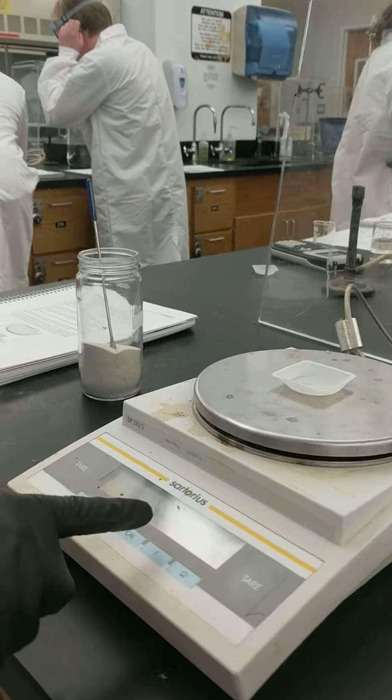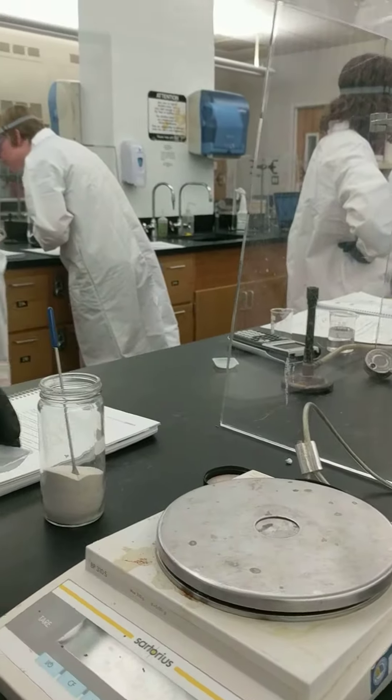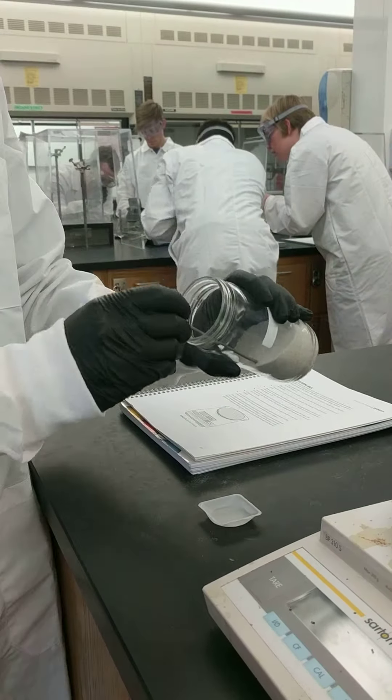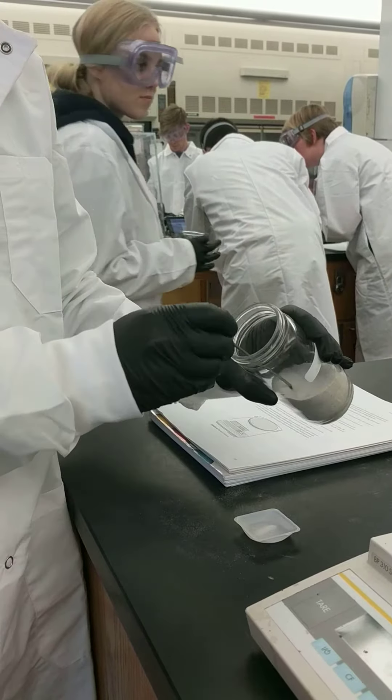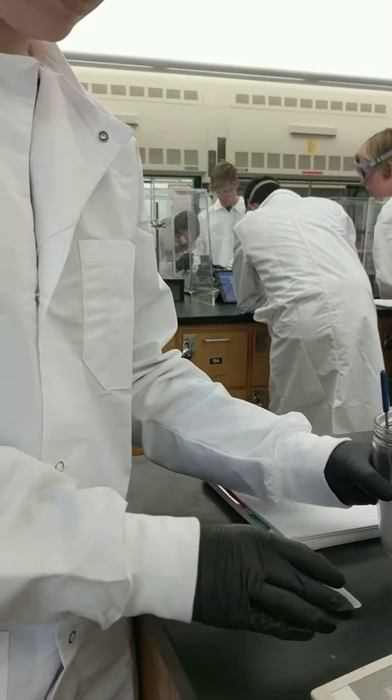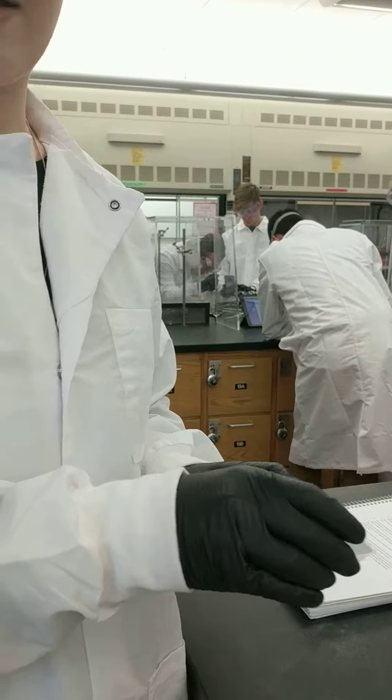And now it's at zero. When I want to measure the chemical, I take the weight boat off of the scale, and then I put some of the chemical onto the weight boat. Today, I'll be measuring this to 0.25 grams.